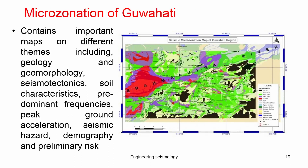Another study carried out was the microzonation of Guwahati, which is in the northeast part of India. They considered all the aspects discussed in the seismic microzonation of Delhi, including geology, geomorphology, soil characteristics, site response amplification, and liquefaction, and finally integrated these into a hazard map. You can see the hazard index values — the darker color has a lower hazard index and the red color has a higher hazard index.